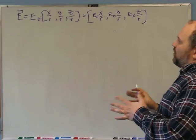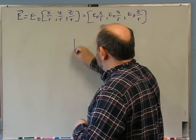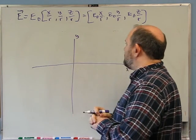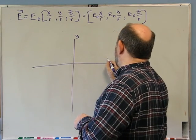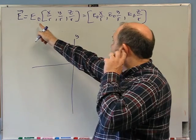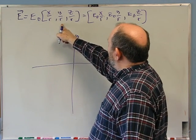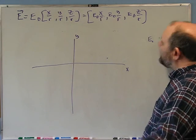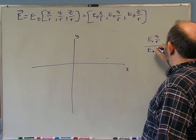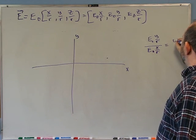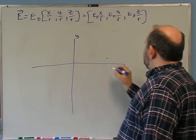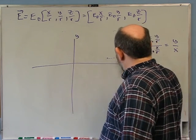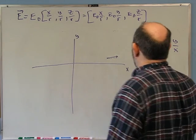Now we need to think about the direction, which is a little harder. You already did something like this in the first problem. Here's X, here's Y — let's forget about Z for the moment. If you choose some random position, the direction is going to be (x/R, y/R). Notice that if you take the ratio of the Y component of the electric field to the X component, it's just Y over X. Here the X component is pretty big and the Y component is small, so the field points in that direction.